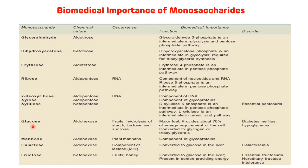An example of aldo-hexose is glucose. It is seen in fruits, and is also produced by the hydrolysis of starch, lactose, and sucrose. Glucose is the major fuel of energy, providing about 70% of the energy requirement of the cell. Excess glucose is converted to glycogen or triacylglycerol. Disorders associated with glucose include diabetes mellitus, which occurs due to insulin deficiency and is characterized by hyperglycemia, and hypoglycemia, which is a reduction in blood sugar level.